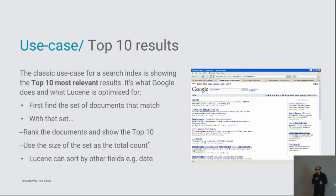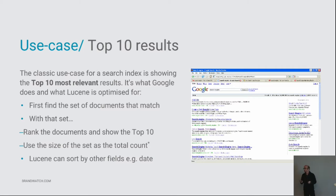Typically the ranking of documents is based on relevance to your search — a well-established field of information retrieval. But you can set it to other things in Lucene, like sorting by any of your fields. You might say I'm interested in new documents, so sort by date — in which case the whole ranking thing is different again.